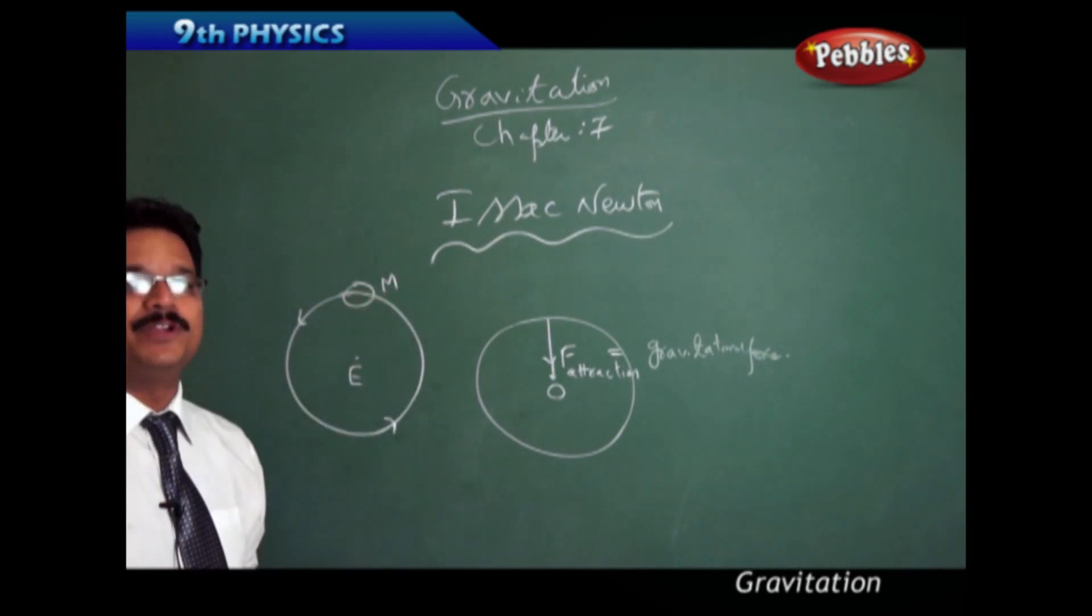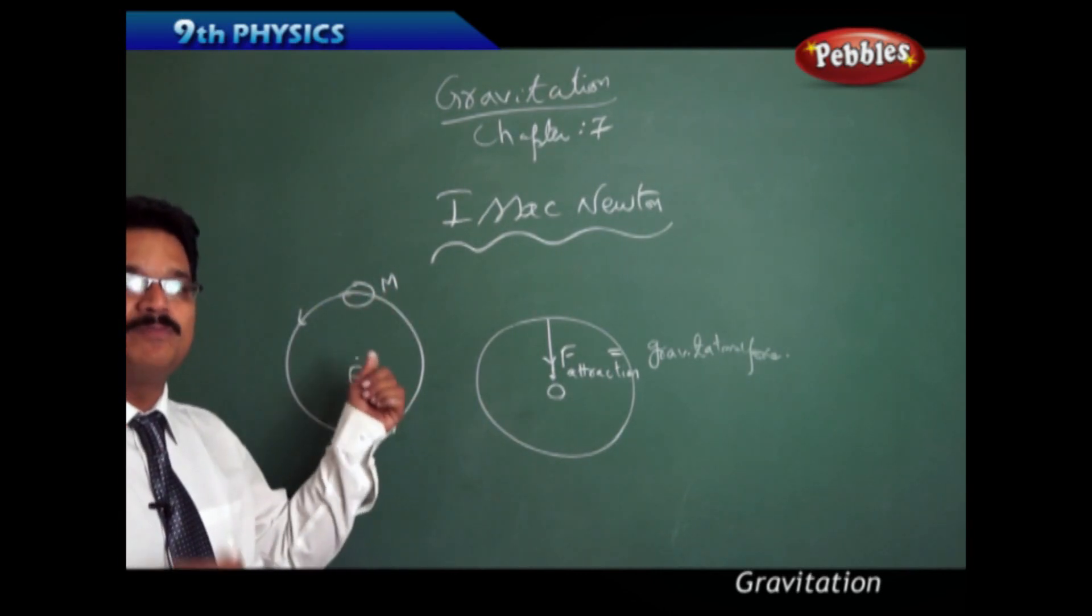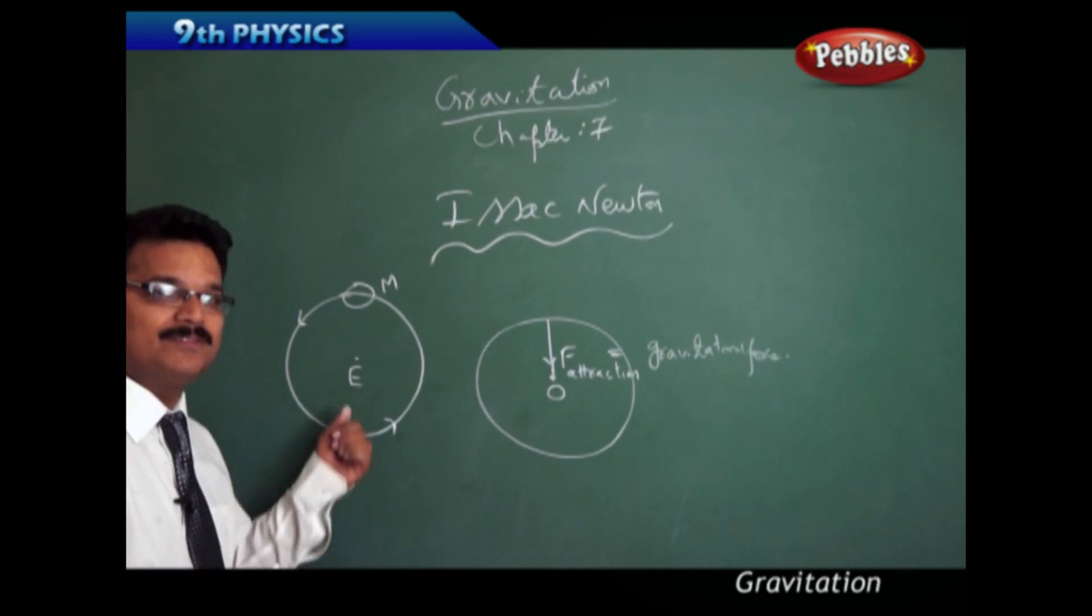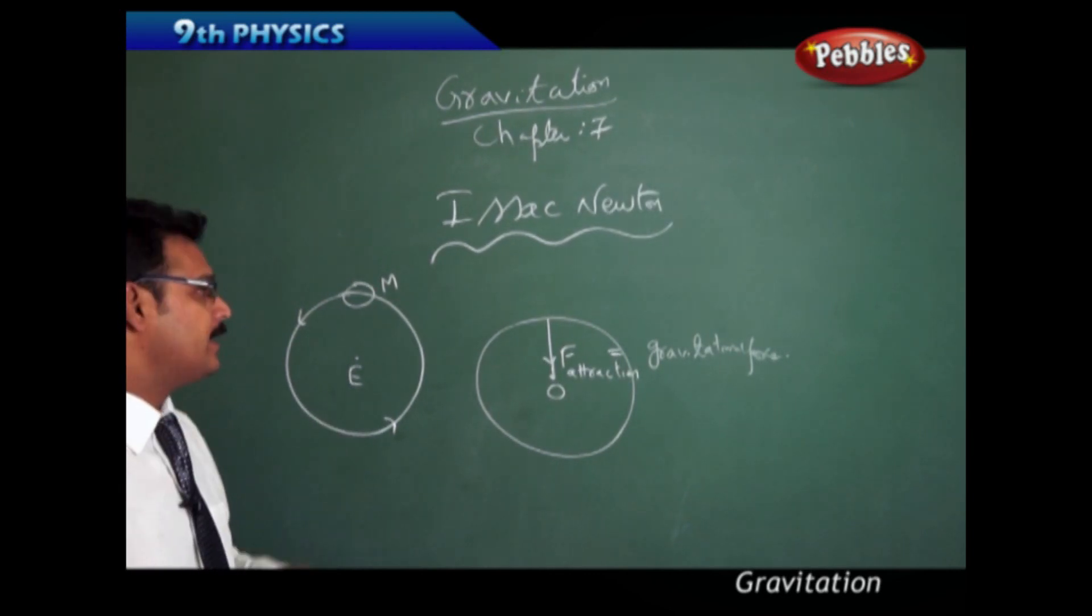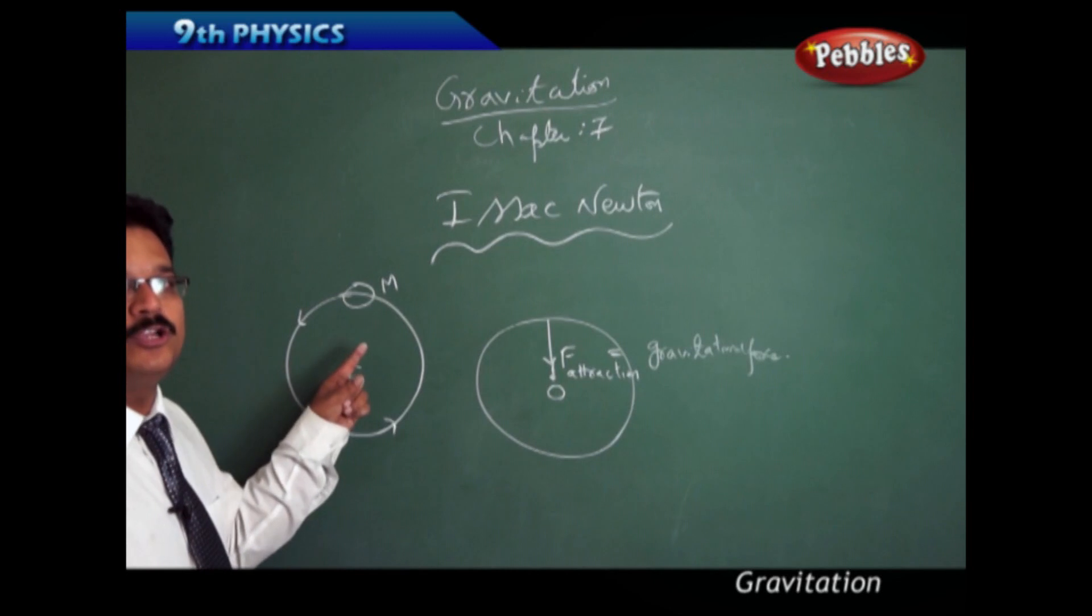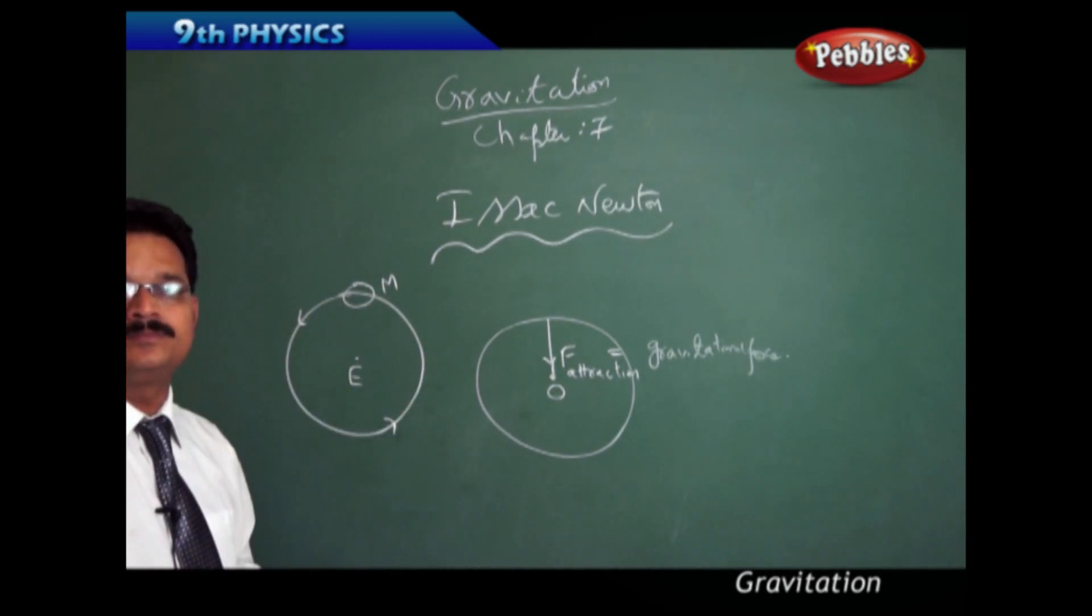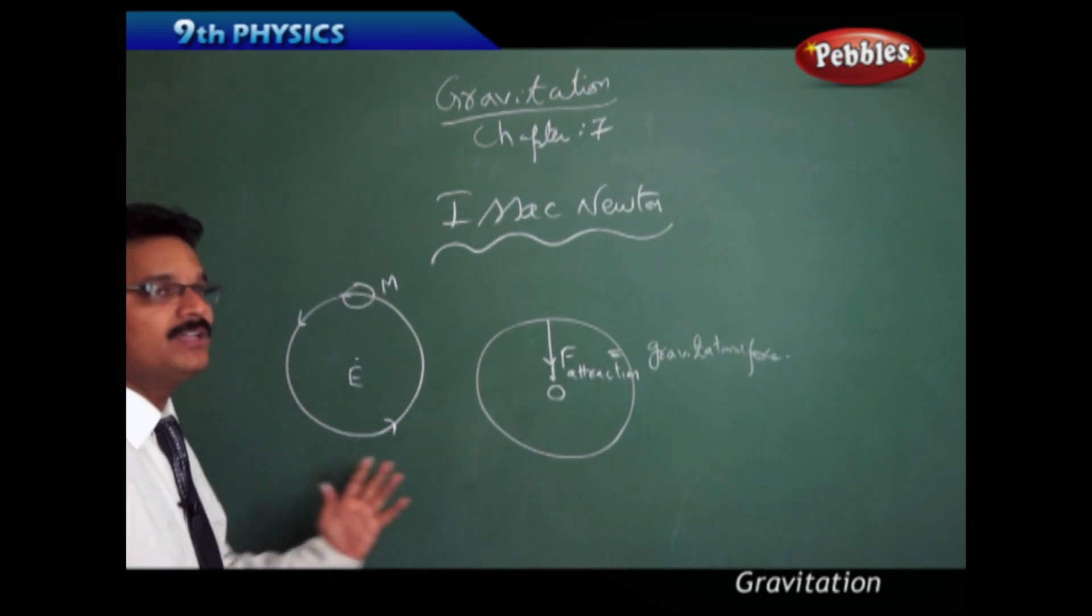Moon is also a massive body, but it is relatively very small compared to the mass of the earth. Then why does this moon continue to rotate around the earth? What are the factors making the moon move around the earth?